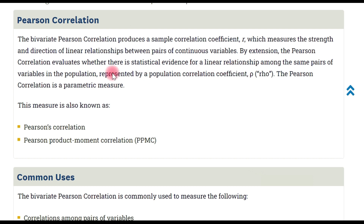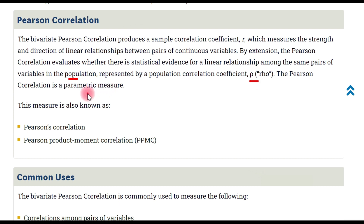The Pearson correlation coefficient evaluates the statistical evidence of a linear relationship among the same pair of variables in the population, represented by the correlation coefficient rho. The Pearson correlation coefficient is a parametric measure.